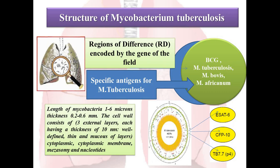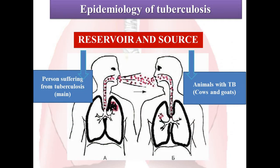Mycobacterium tuberculosis has a length of 1 to 6 microns and a thickness of 0.2 to 0.6 microns. The cell wall consists of three external layers, each having a thickness of 10 nanometers. The cell structure includes a cytoplasmic membrane, mesosomes, and nucleus, as well as an infected cell wall. Now let's discuss how infection and transmission occur.